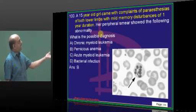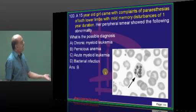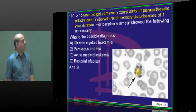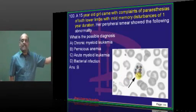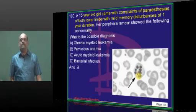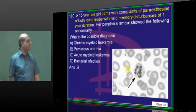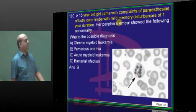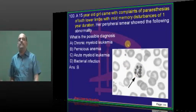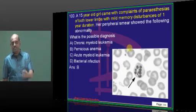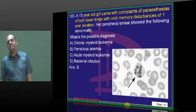15-year-old girl, paresthesias, memory disturbance — what is this? Hypersegmented neutrophil is an important feature of vitamin B12 deficiency, which is seen in pernicious anaemia.